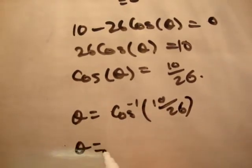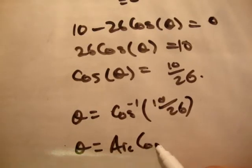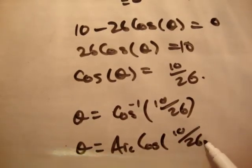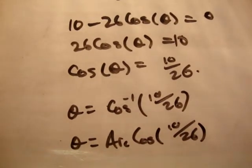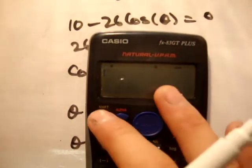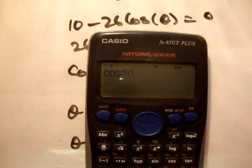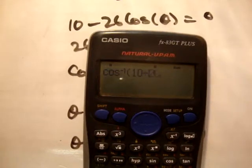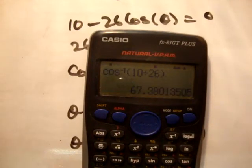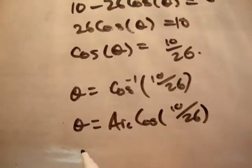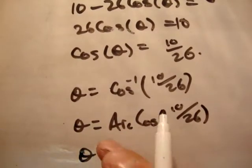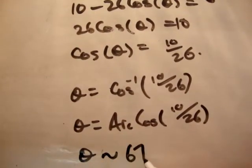Okay, let me plug that into my calculator. Inverse cosine 10 over 26. Shift cos 10 divided by 26, close the brackets. Gives an angle of theta approximately 67 degrees.